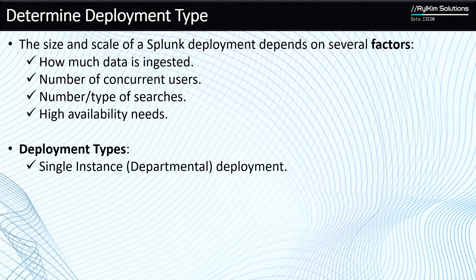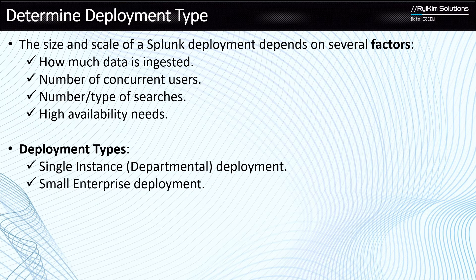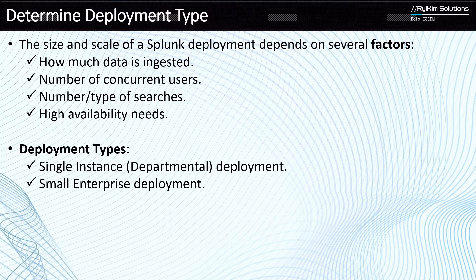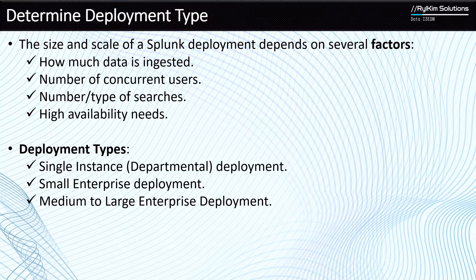So, what are some of the common deployment types that you see with Splunk? The first one is a single instance deployment, also known as a departmental deployment. The second one is what we call a small enterprise deployment. And the largest one is what we're going to call the medium to large enterprise deployment. In the following slides, we're going to see the characteristics associated with these deployment types.